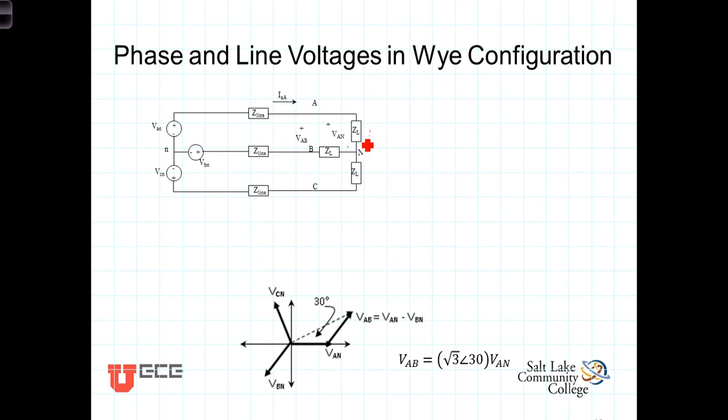in a Y-connected load, the phase voltage, VA, or the voltage across the actual phase, or the impedance of that phase, we call VAN. It's the voltage from the A terminal to the neutral.